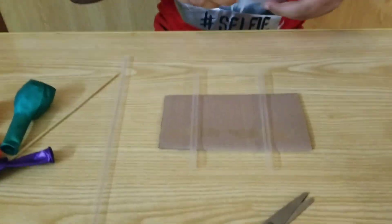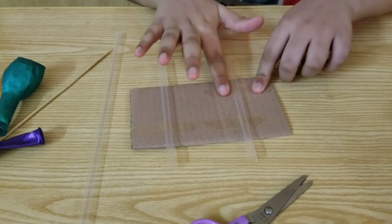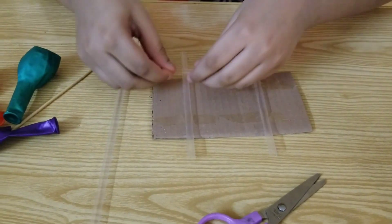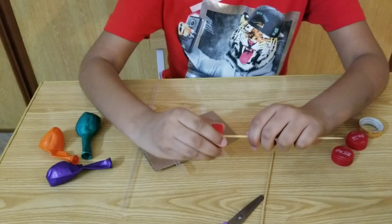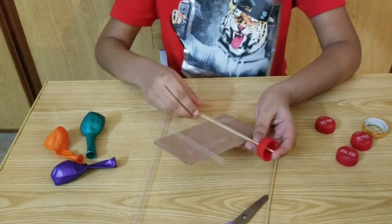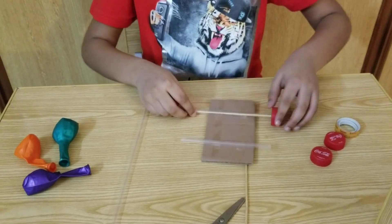Cut the straw in half and paste it on cardboard like this. Make holes in the bottle caps, insert sticks inside them, and then place them inside the straw.